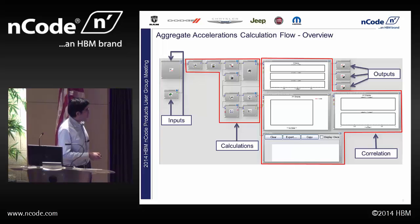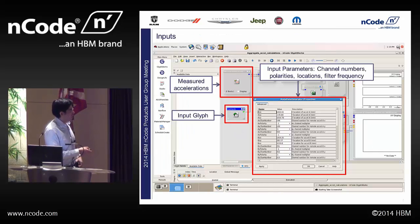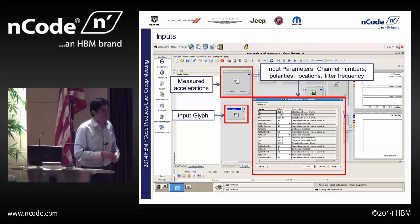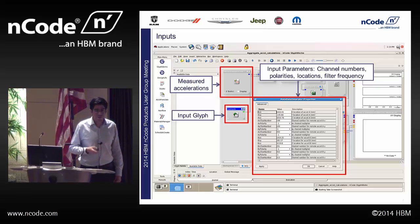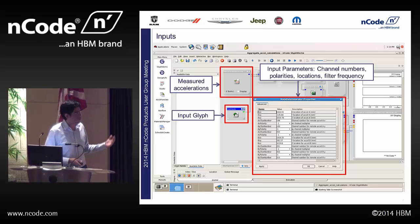The ENCODE flow can be divided into four parts: the input part, the calculations, the correlation part, and the outputs. In the first part — the inputs — we use our measured accelerations. In the input glyph, we fill in all the parameters of the accelerometers, like the position of accelerometers, the coordinates of the CG for the powertrain, and the polarity of the channels. If we want to filter the channels, we do that here as well. It also gives us the capability of using more than three accelerometers — up to eight accelerometers if the test is built that way.